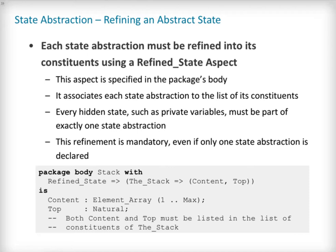Once an abstract state has been declared for a package, it must be refined into its constituents using a refined_state aspect. This must be placed on the package's body, even if the package previously did not require a body. For each state abstraction declared for the package, the refined state lists the set of variables which are represented by this state abstraction. If an abstract state is specified for a package, then it must be complete, in the sense that every hidden variable must be part of a state abstraction. For example, on our stack package's body, we must add a refined_state aspect linking the state abstraction the_stack to the whole hidden state of the package, including both content and top.